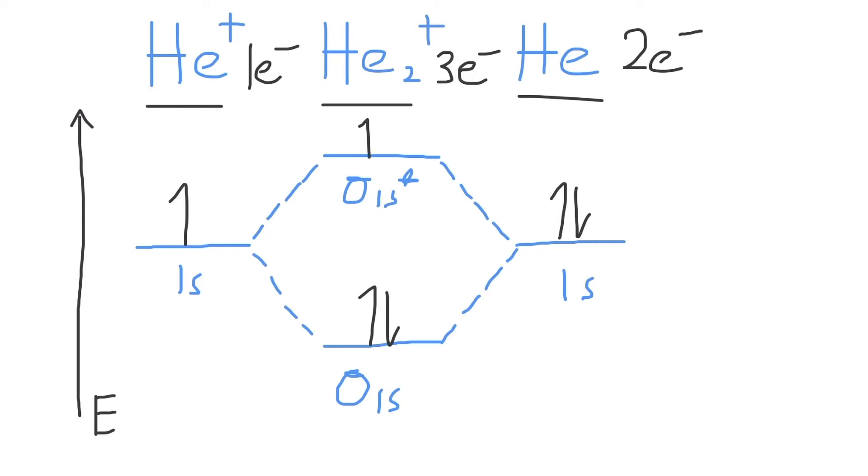And this is your completed molecular orbital diagram for the He2+ ion. Let's also calculate the bond order for He2+, which is a measure of the stability of a bond. Its strength is directly proportional to the number of electron pairs present in the bond.